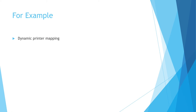Obviously there are certain client computer scenarios — kiosks, or if you work at a bank with floors full of phone agents — where you want all those computers to be exactly the same all the time. But most users are squishier than that. So one example is dynamic printer mapping.